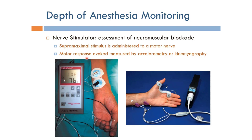We then assess the motor response evoked by this excitation using either accelerometry or kinemyography. One method assesses the motion of the muscles associated with the particular nerve, while the other uses volume change of the muscles via piezoelectric transduction. Whenever we get a response to nerve stimulation, we know the patient is not yet fully under general anesthesia. The response must be below a certain level to confirm that the patient is safe to operate on.